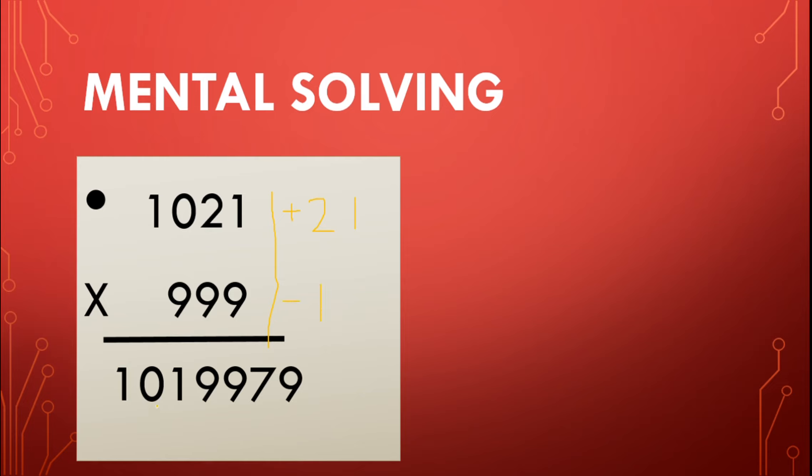So first part is 1,021 minus 1 equals 1,020, and 999 plus 21 equals 1,020. So 1,020 is the first part of our answer.